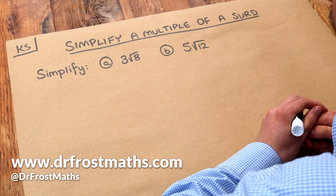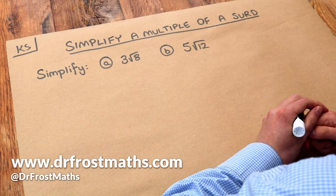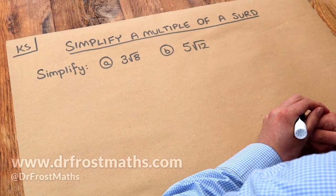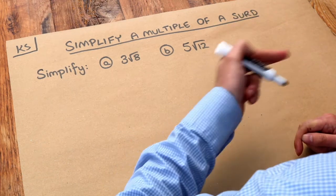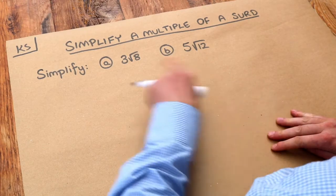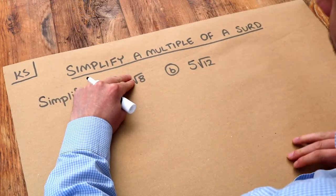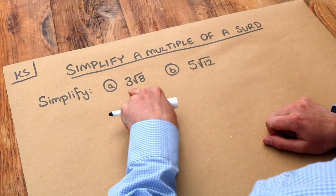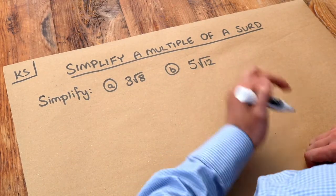Hello and welcome to this Dr. Osama's key skill video on simplifying a multiple of a surd. Now in the previous video we saw how we could simplify a surd. Remember a surd is just a root of a number and we didn't have numbers in front of these. So we had for example simplifying root eight and we might have simplifying root twelve, but now we have to deal with a number in front and not much changes really.